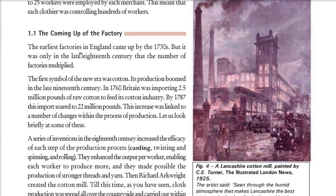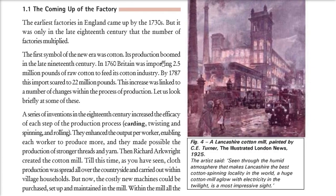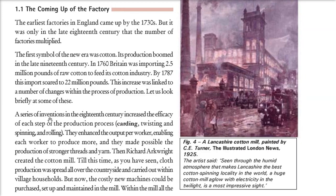The earliest factory came up in the 1730s, but only in the late 18th century did factories multiply. Cotton was the first symbol. By 1760, Britain was importing 2.5 million pounds of raw cotton. By 1787, because so many factories were being established, the import went up to 22 million pounds. The reason was that inventions increased the efficiency of the production process, and a single worker was producing more.